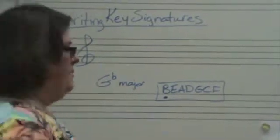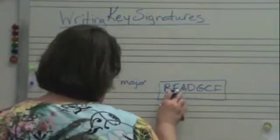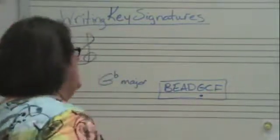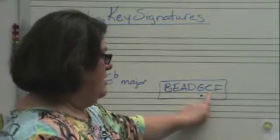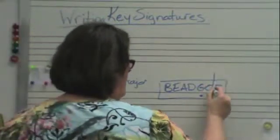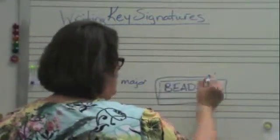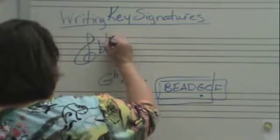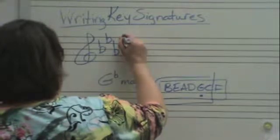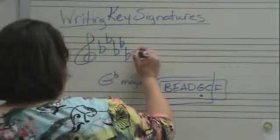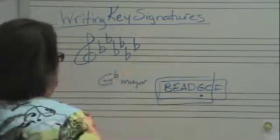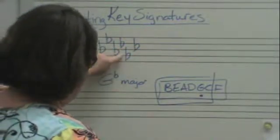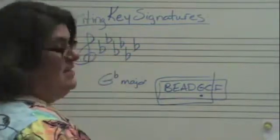G-flat. I'm going to go over here and move my do to G-flat. Add one — that's how many you draw. B-flat, E-A-D, greatest common. Go back one from the end — G-flat. G-flat. It's key of six.